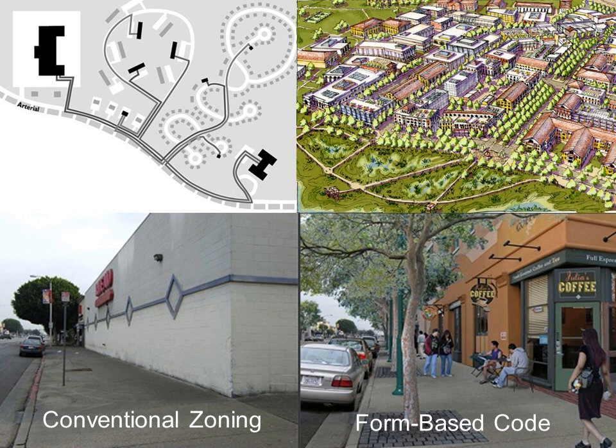Form-based coding attempts to get back to more traditional patterns of development that are more mixed-use and more compact. What you see on the lower left is the kind of thing generally allowed by zoning codes — theoretically walkable but not really a place people would want to walk. The picture on the right shows the kind of thing typically resulting from form-based codes: a permeable facade with interaction between the building and the street — a much more inviting environment for pedestrians.